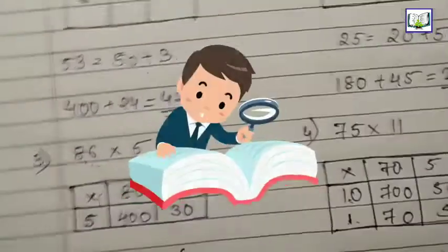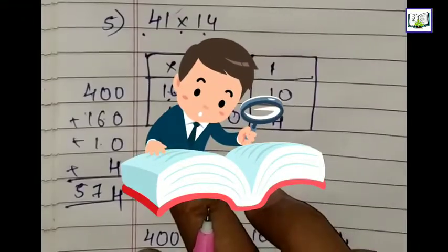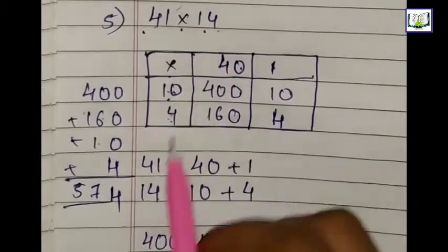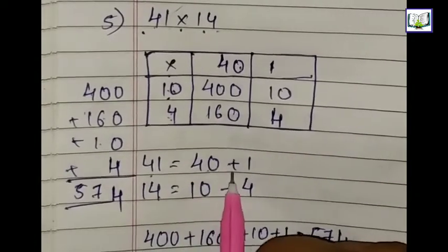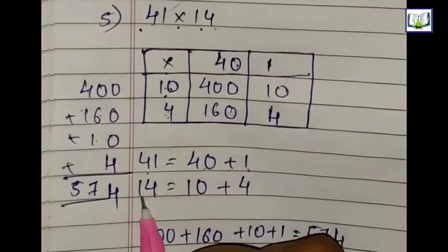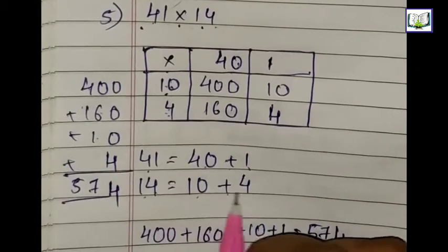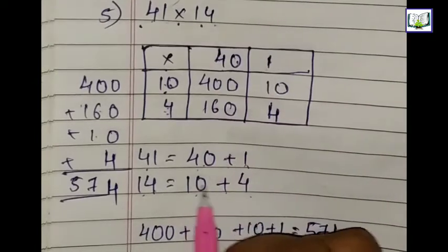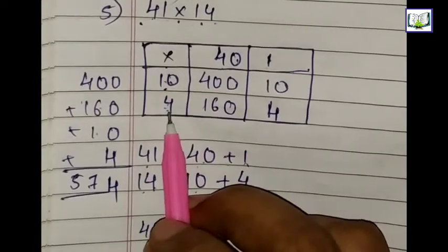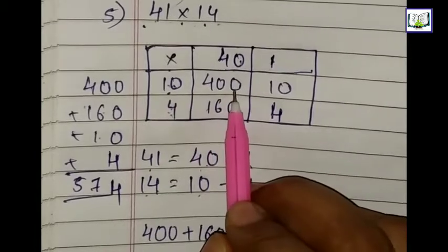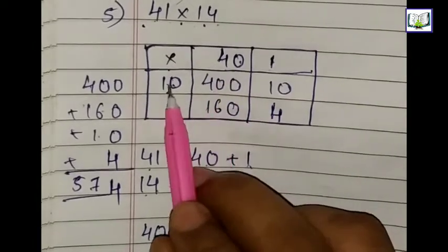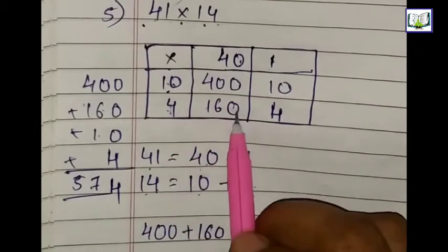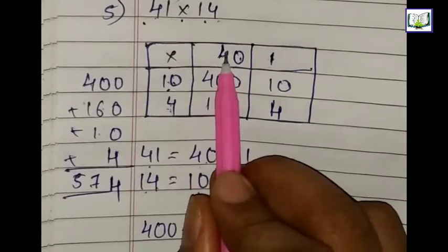Let's see question number 5: 41 multiply by 14. We will break 41 as 40 plus 1, and 14 as 10 plus 4. Now let's solve. 10 times 0 is 0, 10 times 4 is 40, 10 times 1 is 10. Now with 4: 4 times 0 is 0, 4 times 4 is 16, then 4 times 1 is 4.